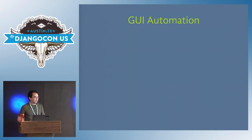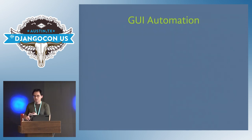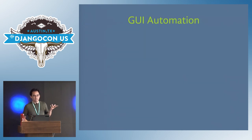Selenium is actually a surprisingly simple tool. It's just opening the browser, getting element objects using CSS selectors, clicking on things, using send_keys to type stuff in, and reading text by checking the .text attribute. That's basically it.